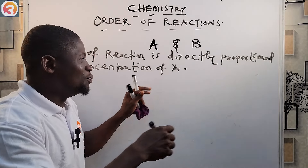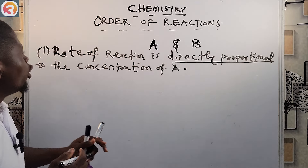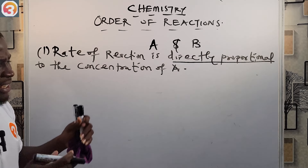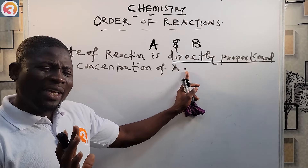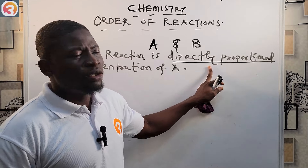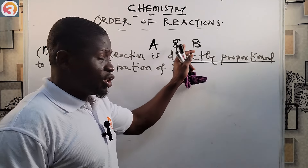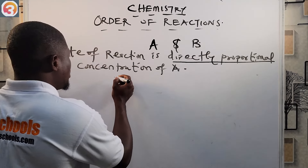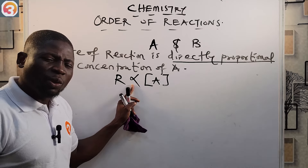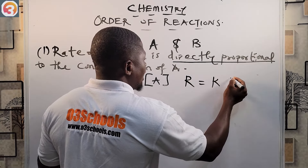One thing we may find out is that the rate of reaction is directly proportional to the concentration of A. That means when the concentration of A increases by a factor of two, the rate of the reaction also increases by a factor of two — because of this direct proportionality. Whatever happens to the concentration of A directly affects the rate of reaction.